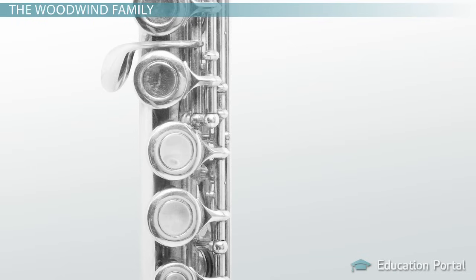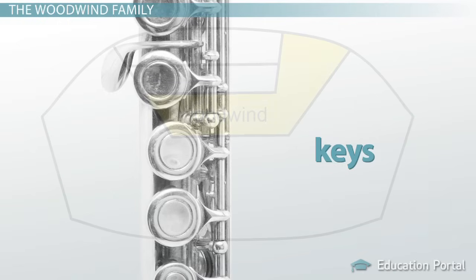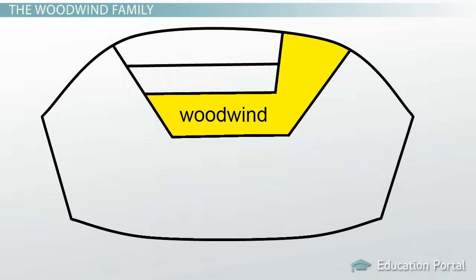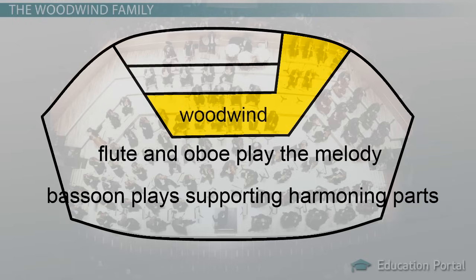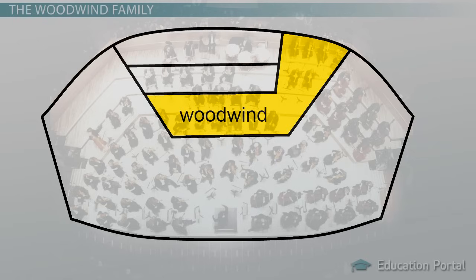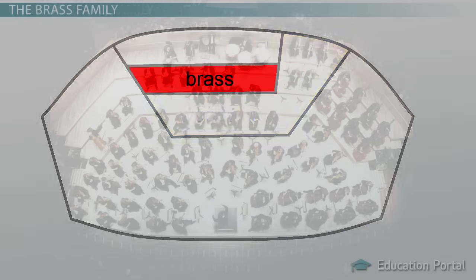The woodwind family features instruments with many buttons, or keys. One of the most challenging parts of playing a woodwind is knowing which keys to press and getting your fingers to the right spots without getting tangled. Once mastered, a woodwind player can play quickly with ease, as you can hear in Bach's Partita for Flute. In the orchestra, higher-pitched woodwinds like flute and oboe tend to play the melody, while lower-pitched woodwinds like bassoon tend to play supporting harmonic parts.